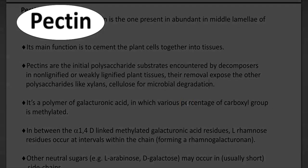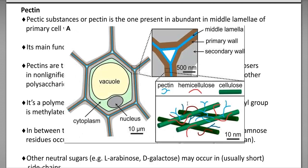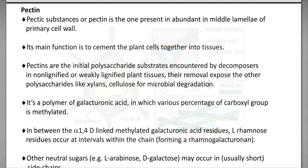Pectin, also referred to as pectic substances, is one of the abundant polymers present in the middle lamella of the primary cell wall. Its main function is to cement the plant cells together to form tissues. Pectins are the initial polysaccharide substances encountered by a decomposing organism in non-lignified or weakly lignified plant tissues. On removal of pectin, it exposes other polysaccharides such as xylan and cellulose, which can then be effectively degraded.